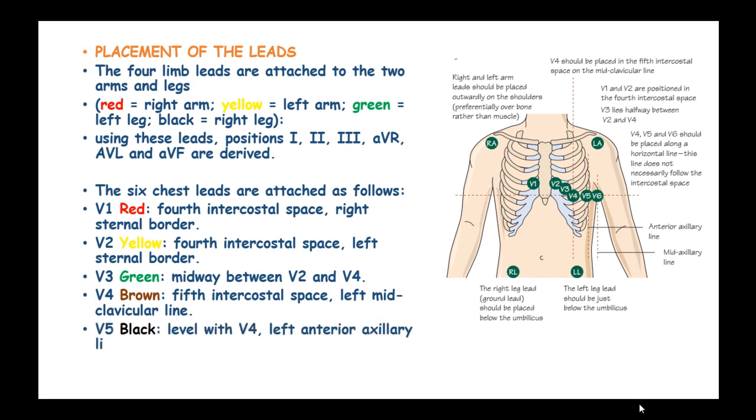V5 is black and is attached to the level with V4, left anterior-axillary line. And V6 is violet and attached to the level of V4, left mid-axillary line.